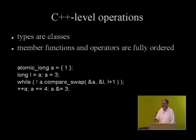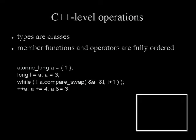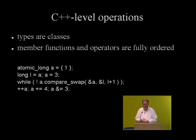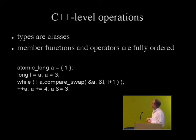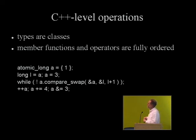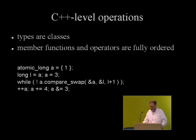We also have a C++-level view of the operations where those atomic types look like classes. We have a small number of member functions and operators, and those are the fully ordered operations. So when you write an assignment, you'll get an atomic operation. When you do a compare-and-swap, that'll be strong. When you do a plus-equals operation, that increment is atomic and fully ordered.